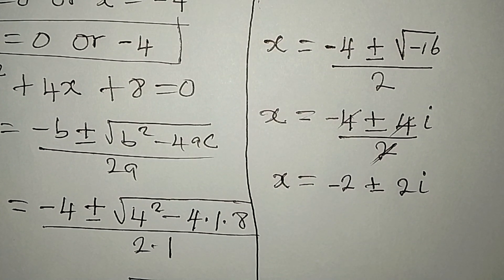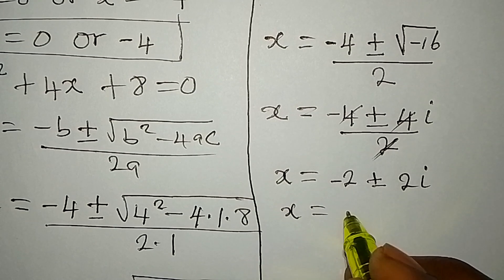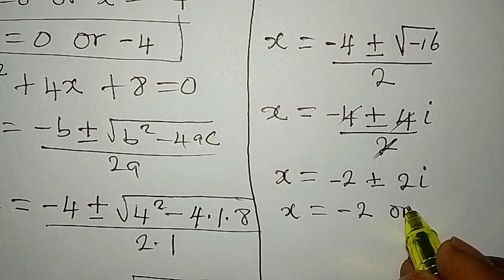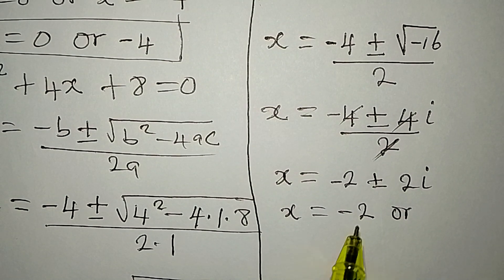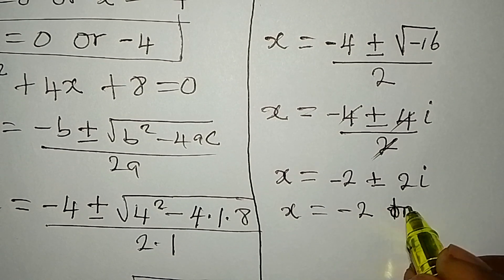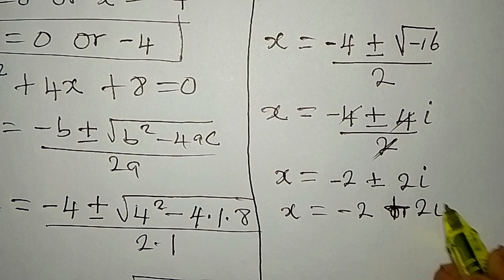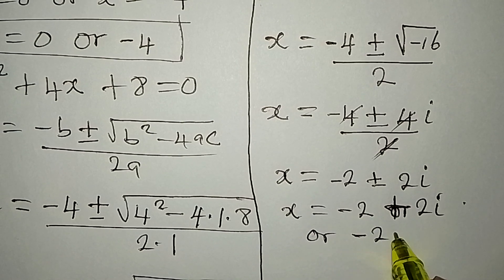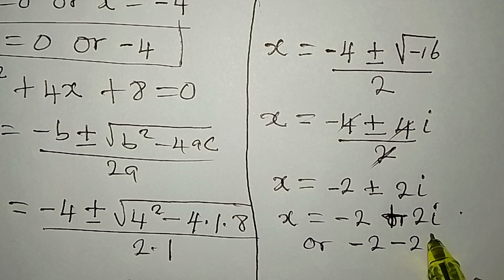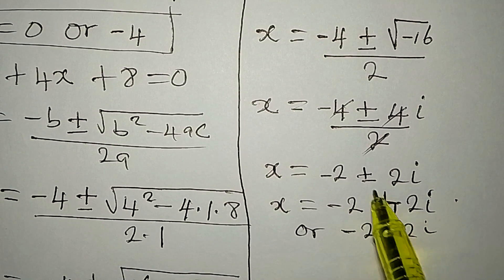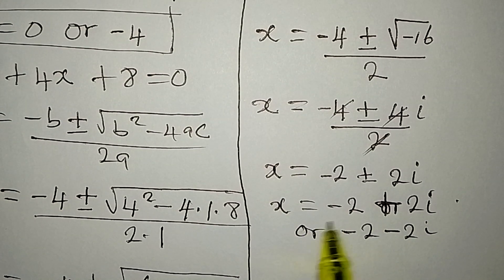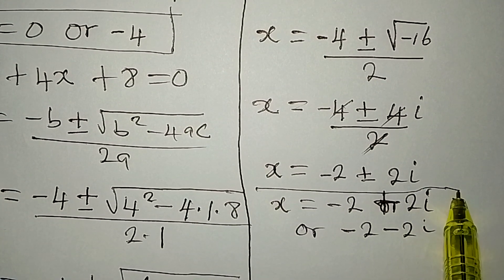So we have two complex solutions: x equals negative 2 plus 2i, or x equals negative 2 minus 2i. Because of the plus-or-minus, one is positive and the other negative.